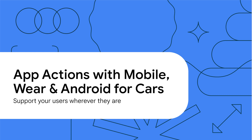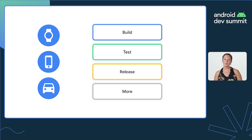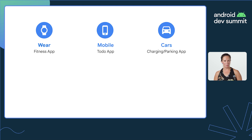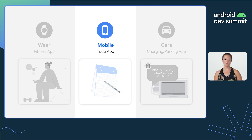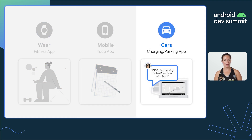With that understanding of the high-level architecture, let's dive in and see the differences when developing for voice across different device types like mobile, wear, and Android for cars. Regardless of the device type you're developing for, you'll have to build, test, and release your app. We have three different example apps we'll be looking at: a fitness app for wear, a to-do app for mobile, and a parking app for cars.